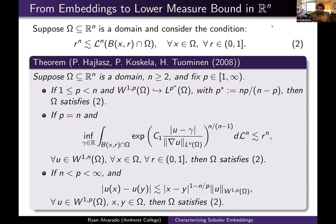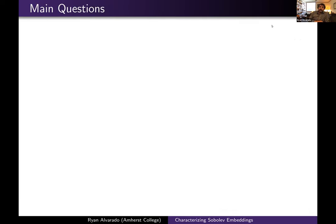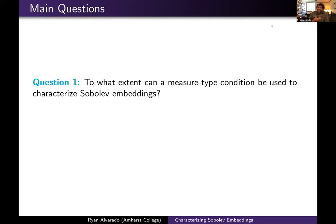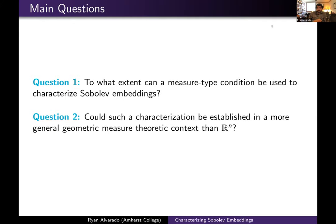For the cases p = n and p > n, the philosophy is somewhat the same, but the details differ given the nature of the inequalities assumed. So Sobolev embedding implies something about the underlying measure, but it's known that this measure condition is not enough alone to guarantee that the domain satisfies a Sobolev embedding. This raises the question: to what extent could this measure-type condition be used to characterize Sobolev embeddings?